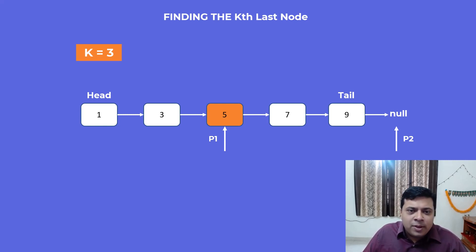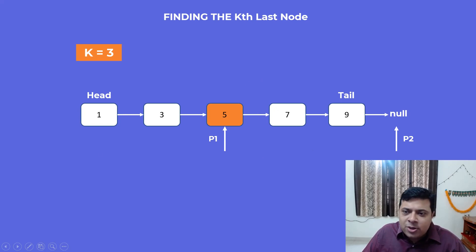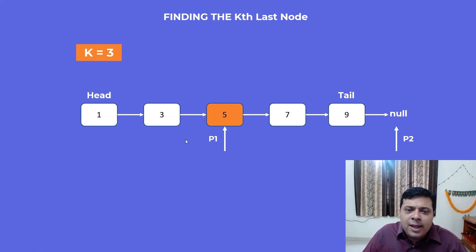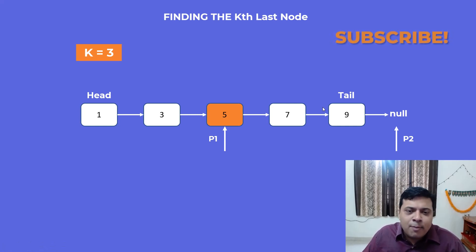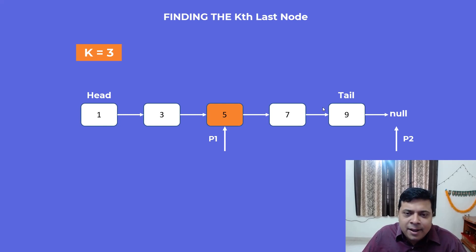We can do this problem in a single pass, which makes it really easy. No matter what value of k is given to you, you just have to advance p2 initially to that position, and once p2 reaches the end of the list your first pointer will point to the kth last node. Friends, this is all there is to this problem. Hope you liked this video — feel free to comment below, subscribe to the channel, and press the notification bell icon so you get instant notifications whenever we upload a new video. Have a nice day everyone, goodbye!